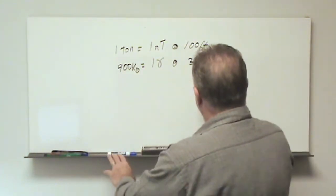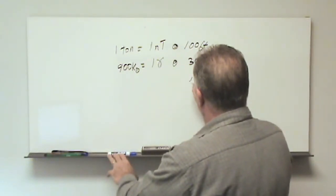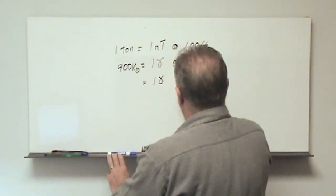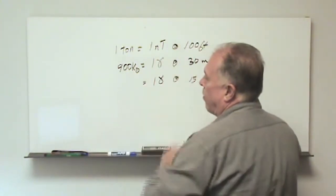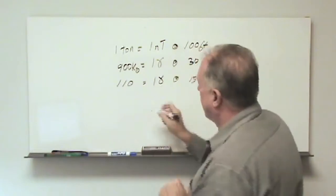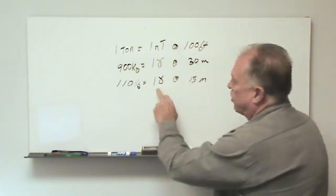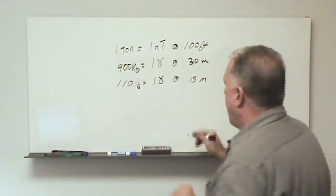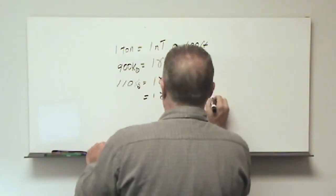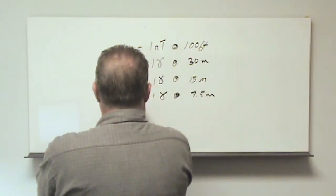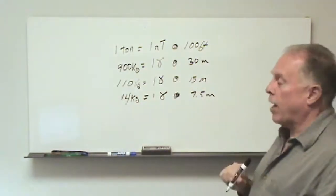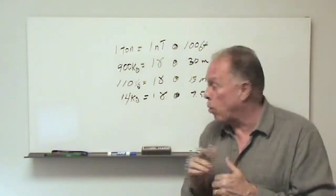And then of course as we lower the range, in other words if we went to 15 meters, we would still see the 1 nanotesla or 1 gamma and the mass would then go down by a factor of 8. So we would see approximately 110 kg would give us a 1 nanotesla at 15 meters. And just to finish this out, 1 gamma at 7.5 meters, 8 goes in here approximately 14 times, so now we would see 14 kg at 7.5 meters. So we can see a very small target at quite a large range.